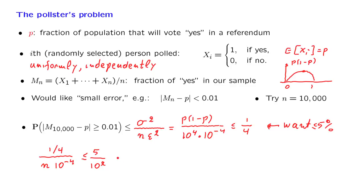And after you solve this inequality, you find that this is equivalent to taking n larger than or equal to 10 to the sixth. And then the 5 together with that 4 give us a denominator of 20. And this number is equal to 50,000.